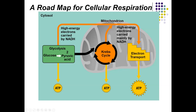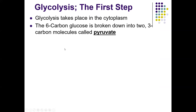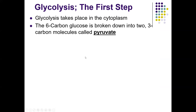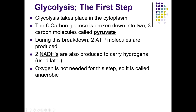Glycolysis takes place in the cytoplasm. The six-carbon glucose is broken down into three-carbon molecules called pyruvate. During this breakdown, two ATP molecules are produced — this is what you get from anaerobic respiration. Key point: NADH molecules are produced to carry hydrogens. Think of NADH as a wheelbarrow — NAD is the wheelbarrow, and the hydrogens and electrons are its cargo. The wheelbarrow fills up, moves, dumps its load, and goes back for more.